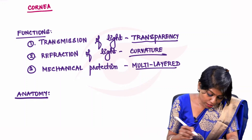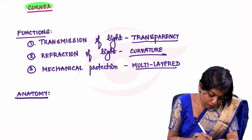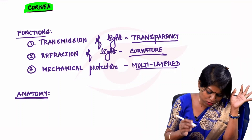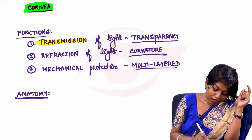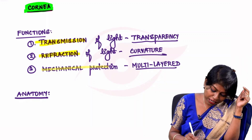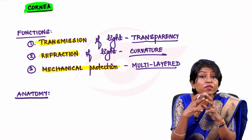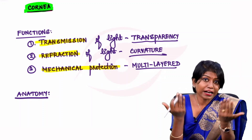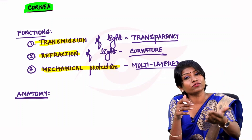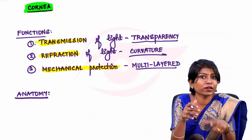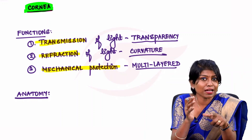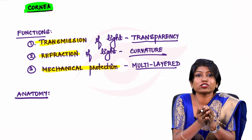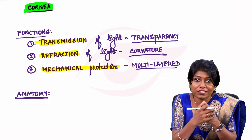We're going to start with the cornea. The three functions of the cornea are: transmission of light, refraction of light, and mechanical protection. Mechanical protection is a function because the cornea forms the anterior one-sixth of the eyeball — outside the cornea you have the sclera, and unlike the posterior portion, there is no Tenon's capsule anteriorly.